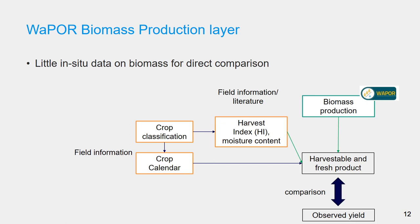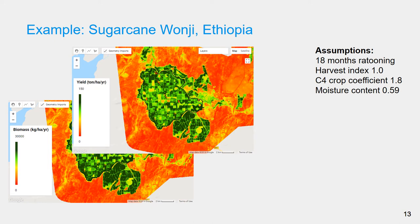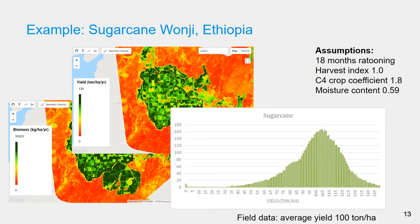This is then compared to the observed yield. An example of the comparison done is the sugarcane irrigation scheme in Wonji, Ethiopia, where the biomass production was converted to yield. With individual fields having different cropping seasons, the calculations used a fixed crop season with a duration of 18 months, harvest index of 1.0 and moisture content of 0.59, which were obtained from fieldwork by an IHE student. As the WAPOR database is based on C3 crops, a conversion factor for sugarcane, a C4 crop, was also applied. The results show the average yield in the system being 100 tonnes per hectare, which is about the same as reported by the scheme manager. The large variation is also related to the range of actual crop season length and timing.